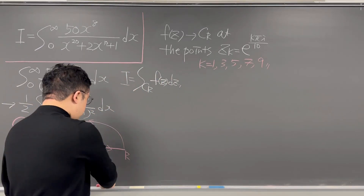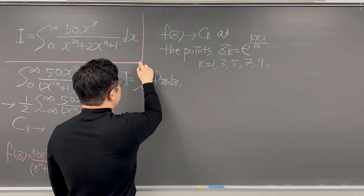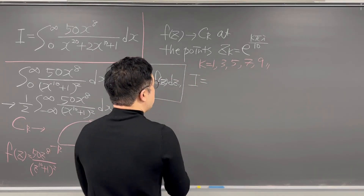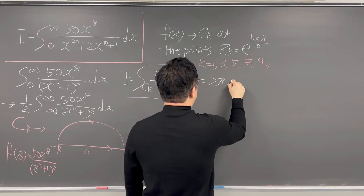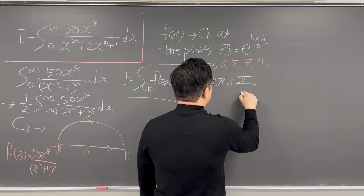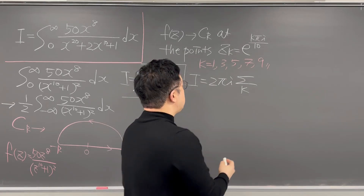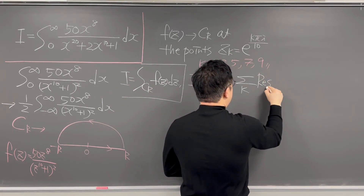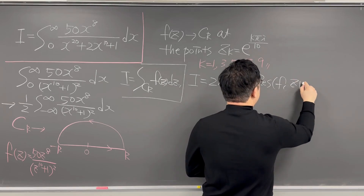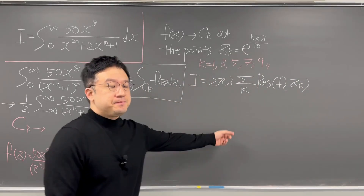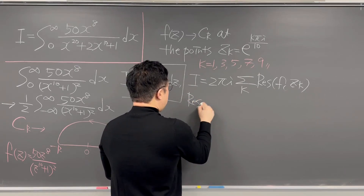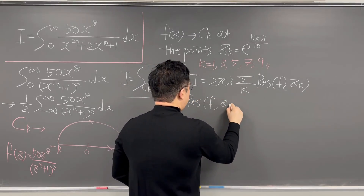So that's why we can rewrite this integral as I equals 2 pi i times summation over k of the residue of F at Z_k.